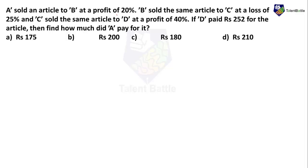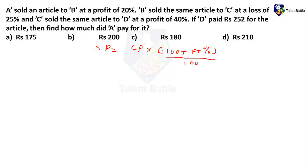What is the basic formula for profit and loss in terms of selling price and cost price? The formula is: Selling Price = Cost Price × (100 + profit%) / 100 for a profit, and Selling Price = Cost Price × (100 − loss%) / 100 for a loss. To find any selling price we use this formula.